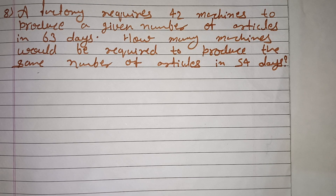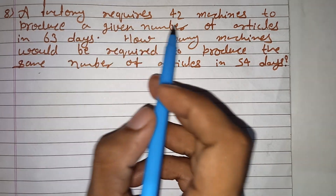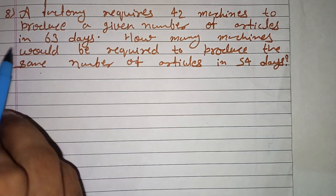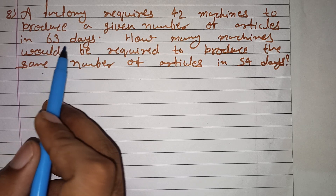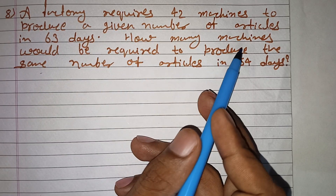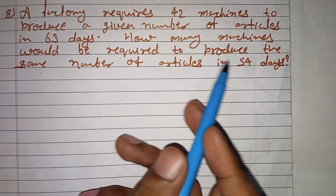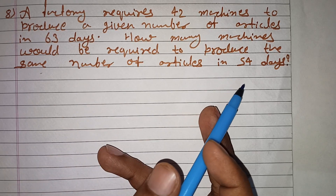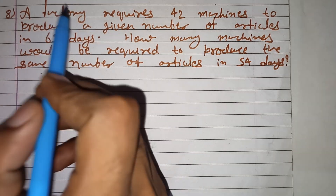In today's video we will discuss question number 8 from chapter Direct and Inverse Proportions, exercise 13.2. A factory requires 42 machines to produce a given number of articles in 63 days. How many machines would be required to produce the same number of articles in 54 days?